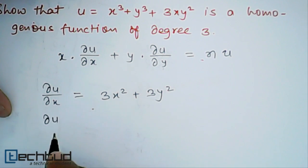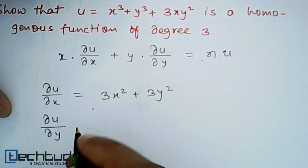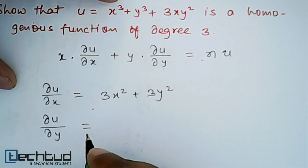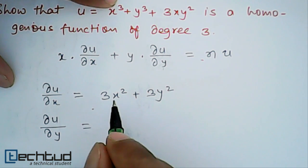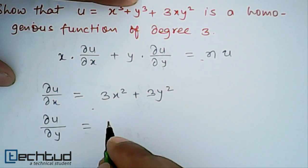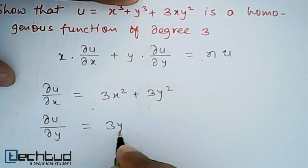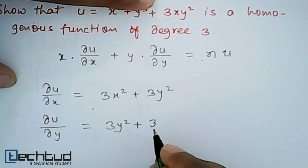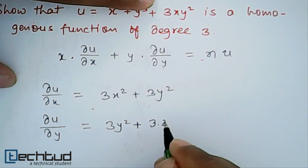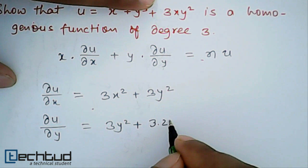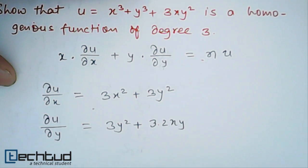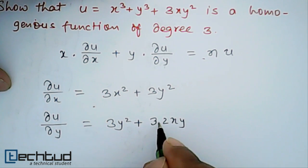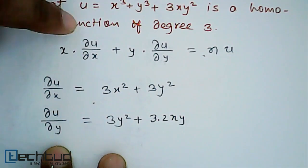Now del u upon del y — here we treat x as a constant. So differentiation of x cubed will be 0. Differentiation of y cubed gives 3y squared, plus 3 times 2 gives 6xy. So del u upon del y equals 3y squared plus 6xy.